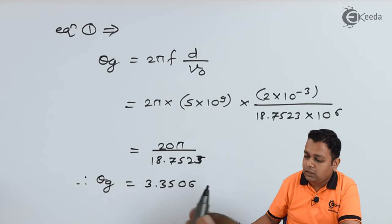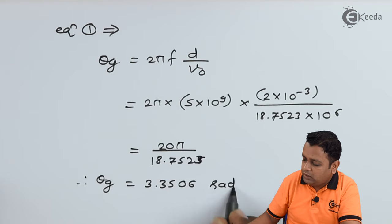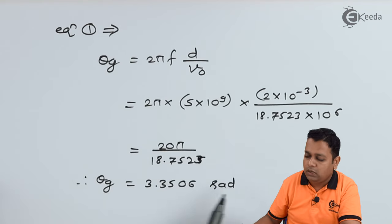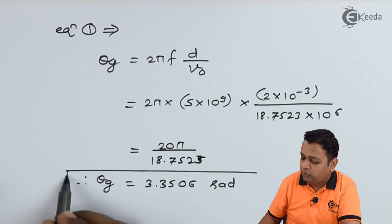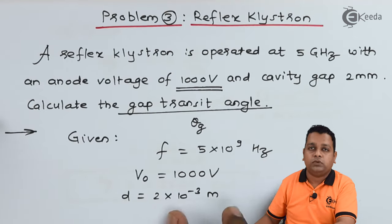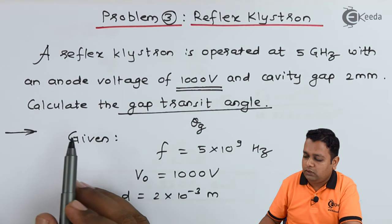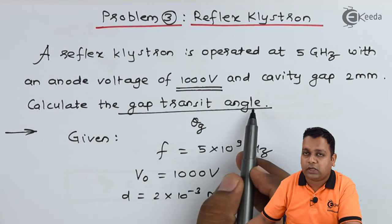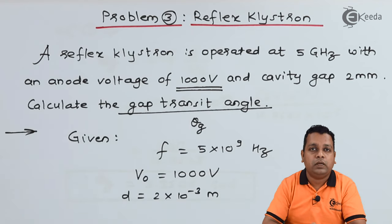As this is the angle, we have measured it in terms of radians. So I put radians as the unit of measurement and outline this answer. So as per problem number 3, we had to calculate the gap transit angle and that value has been calculated.